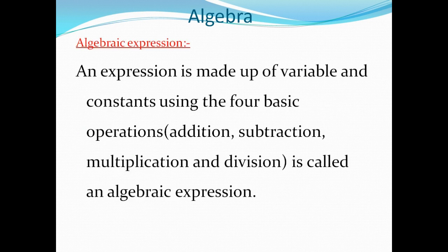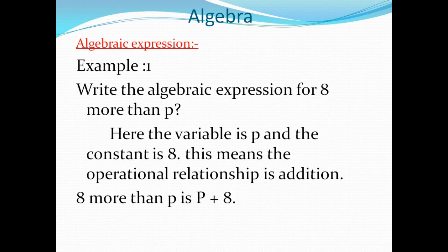Third, algebraic expression. An expression is made up of variables and constants using the four basic operations — addition, subtraction, multiplication, and division. That is called an algebraic expression. For example, write the algebraic expression for '8 more than p.' Here, 8 is a constant and p is a variable. '8 more than p' means addition, so we write: p + 8.